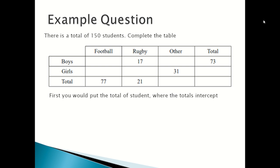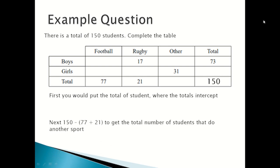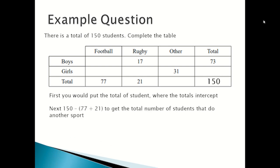First, you put the total number of students where the totals intercept, which is usually in the bottom right-hand corner — since the total number of students is 150. Next, you do 150 minus (77 plus 21) to get the number of students that do another sport, which is 52. Then you do 21 minus 17 to get the number of girls who do rugby, which is 4.